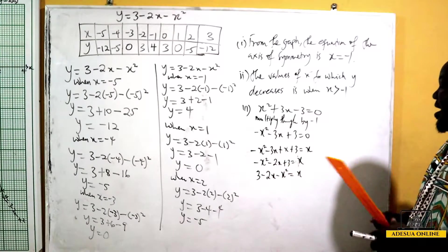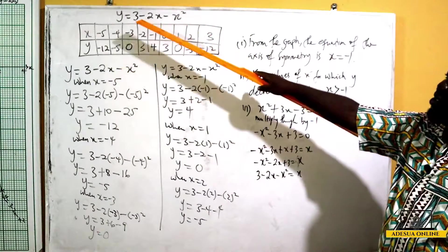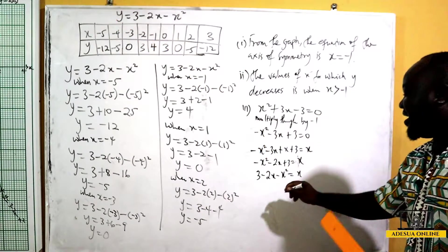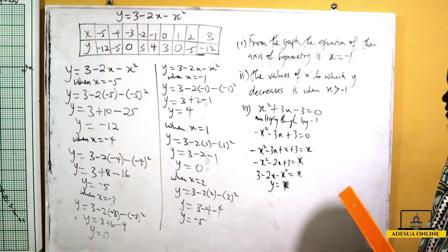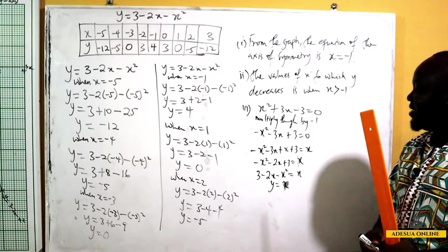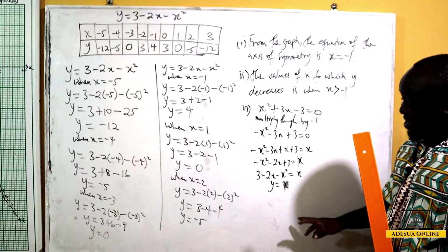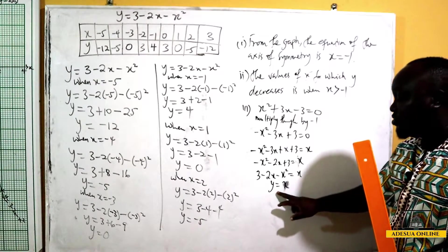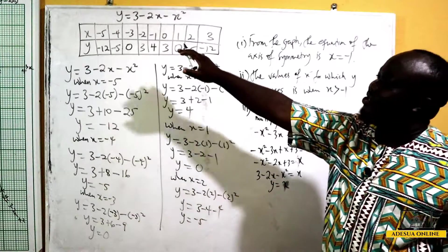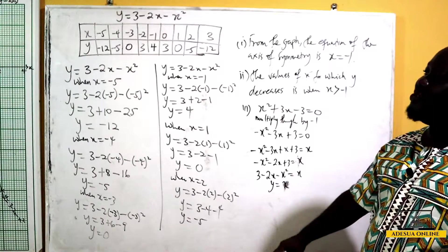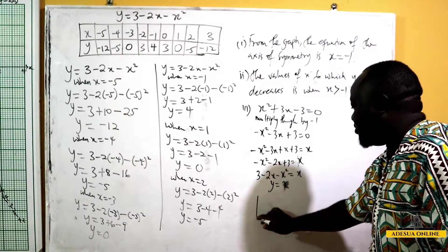Since our curve equation is y equals 3 minus 2x minus x squared, and we've shown that 3 minus 2x minus x squared equals x, this means y equals x. That is a straight line passing through the origin — when x is 0, y is 0.